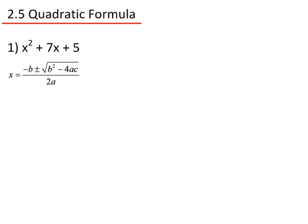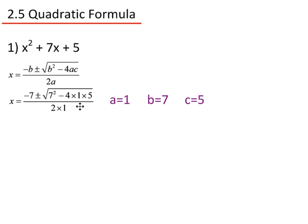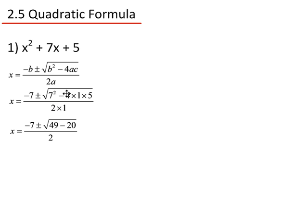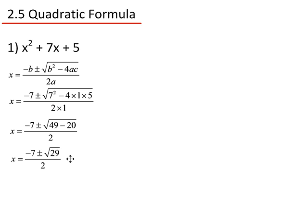We now need to substitute those numbers in: a is 1, b is 7 and c is 5. Now we do the calculations. 7 squared gives 49; 4 times 1 times 5 gives 20; and 2 times 1 gives 2. 49 minus 20 is 29. So x equals minus 7 plus or minus the square root of 29, divided by 2.